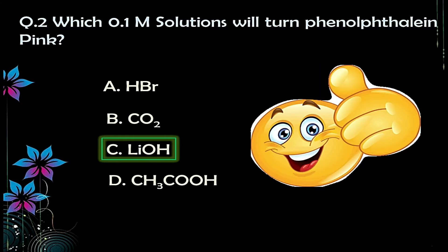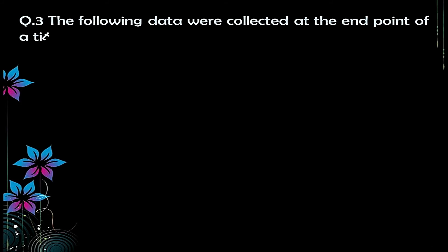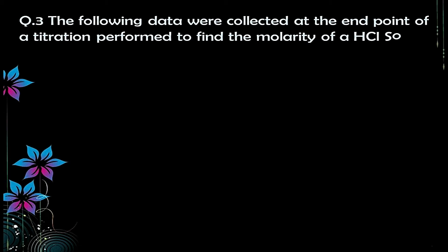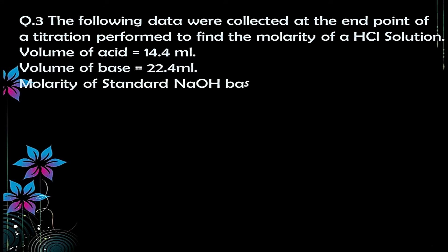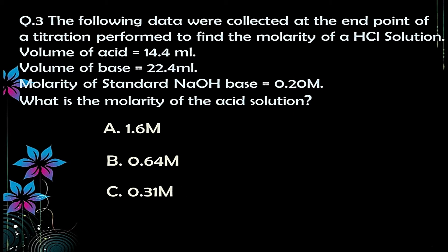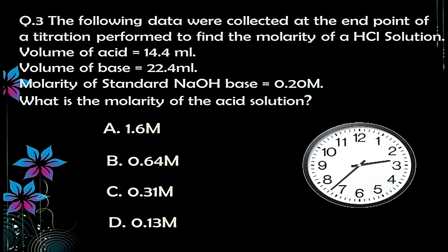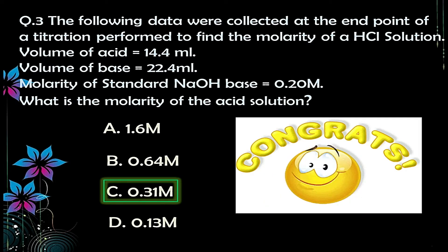Question number three: data collected at the endpoint of a titration to find the molarity of HCl — volume of acid is 14.4 ml, volume of base is 22.4 ml, molarity of standard NaOH is 0.20 M. What is the molarity of the acid? Options: A) 1.6, B) 0.64, C) 0.31, D) 0.13 M. The correct answer is option C — 0.31 M.